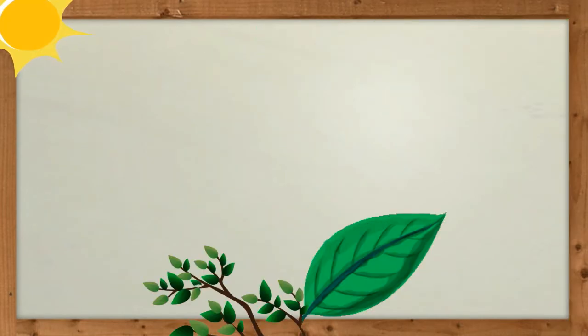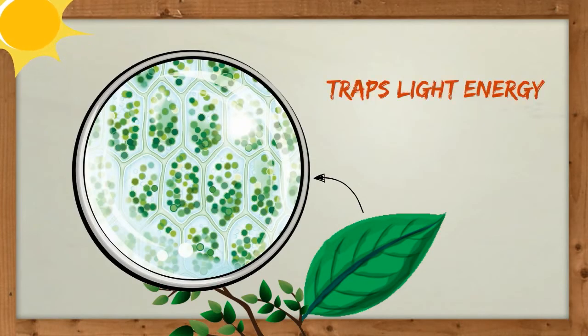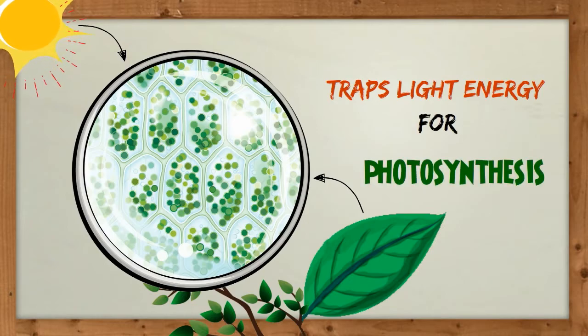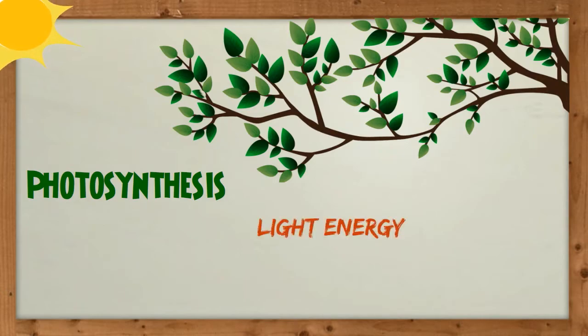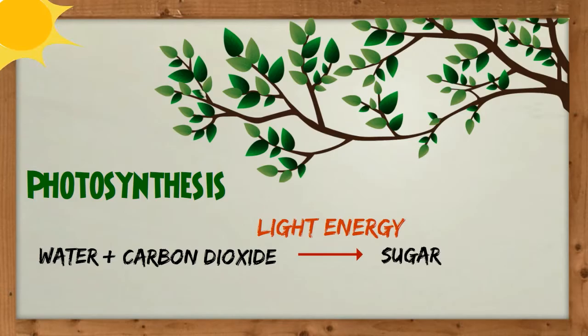The leaves of a plant contain a green substance called chlorophyll which traps light energy from the sun. Light energy is necessary for photosynthesis to take place. The leaves use light energy to convert water and carbon dioxide into sugar and oxygen.